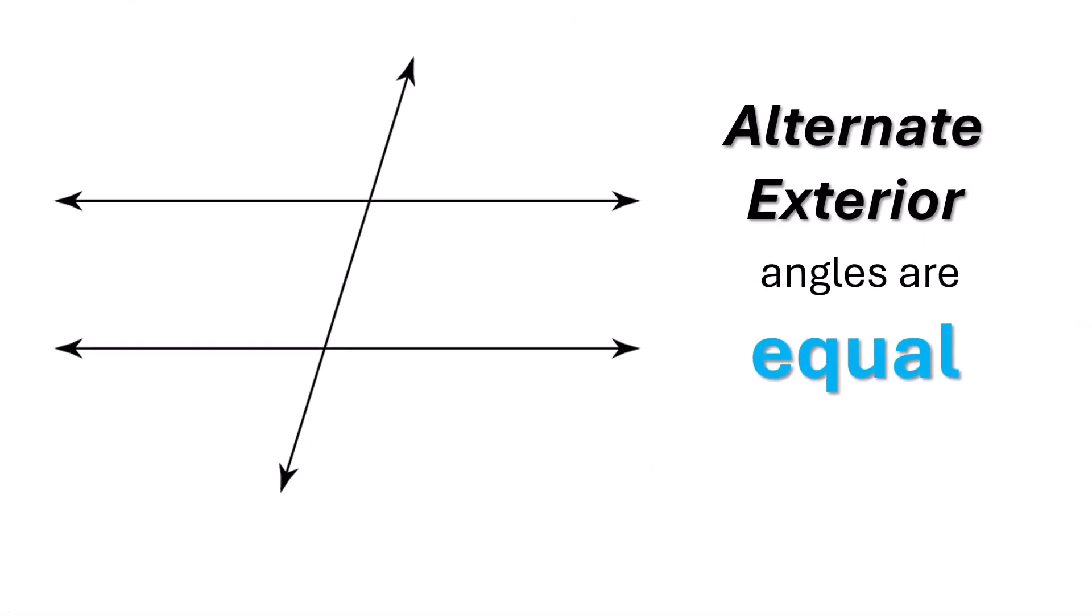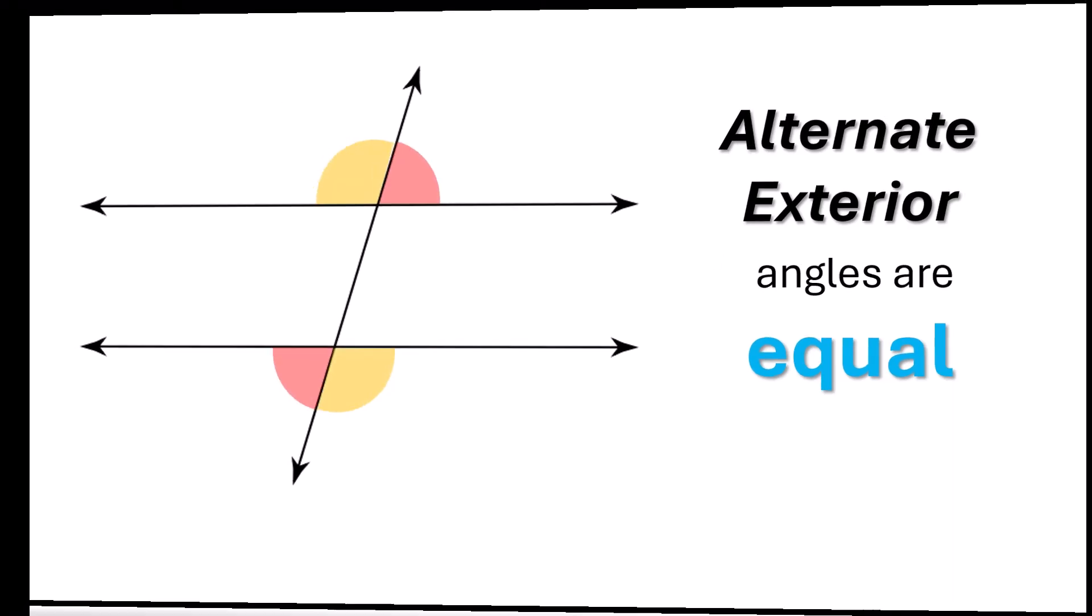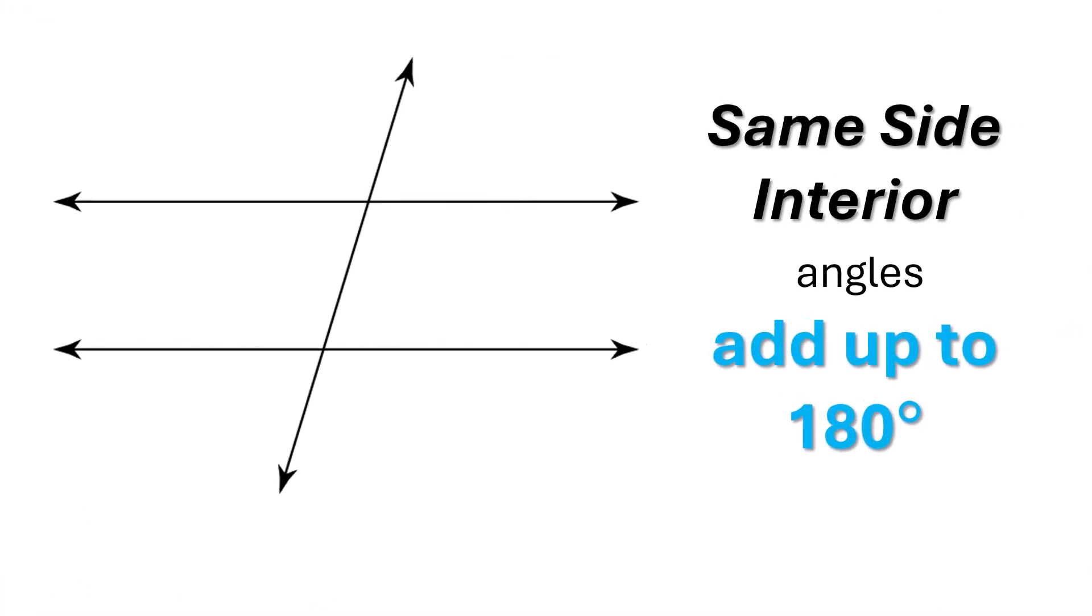Alternate exterior angles are equal. There's one pair here and the other pair on the other side. This is the one that doesn't fit. This is the oddball. Same side interior angles add up to 180. There's two pairs of these, but both of them are going to add up to 180.